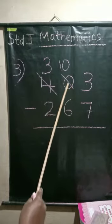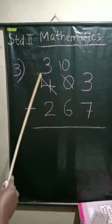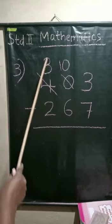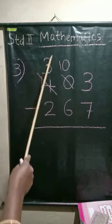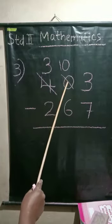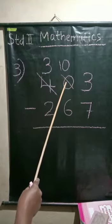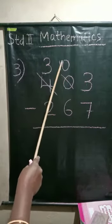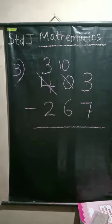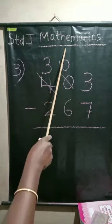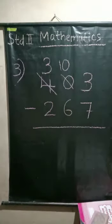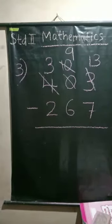One is coming back to the place. Four changes to its before number, 3. Next place, zero changes to 10. This is 10. Ten changes to its before number, 9, and 3 changes to 13. Now see it.